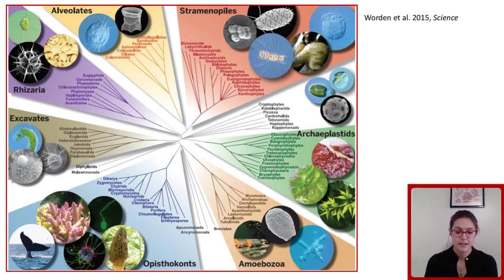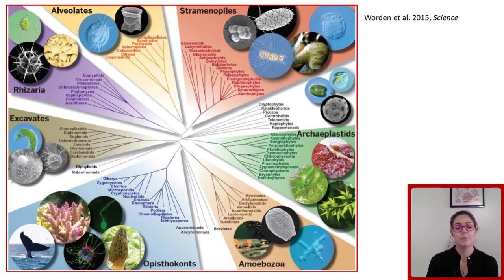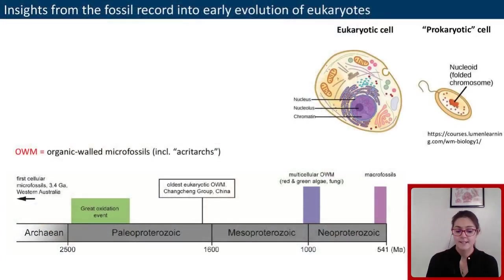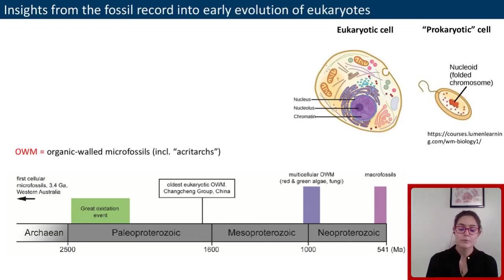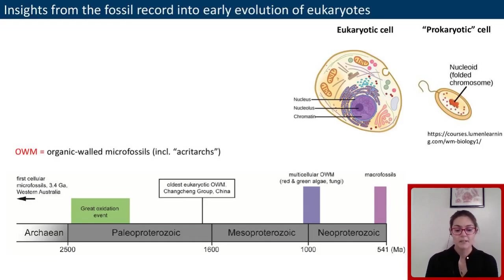Although charismatic eukaryotes like us animals are big — like this whale at the bottom here — there's also a vast diversity of microscopic forms. This is a busy phylogenetic tree of main eukaryotic groups, but most eukaryotes are single-cell protists. In fact, they remained tiny through most of the Proterozoic. We mainly know about the evolutionary history of early complex cells through the record of organic-walled microfossils. They appear around 1.6 billion years ago, and multicellular fossils appear around 1 billion.